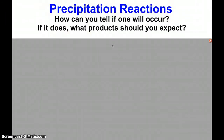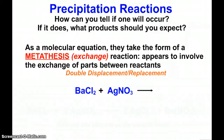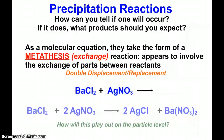How can you tell if a precipitation reaction is going to occur, and if it does, what product should you expect? At the molecular equation level, they take the form of what's called metathesis — an exchange reaction — where it appears to involve the exchanging of parts between reactants. This is what we'd call a double displacement or double replacement reaction. For example, barium chloride and silver nitrate would give two silver chlorides and barium nitrate. But how does this play out at the particle level?